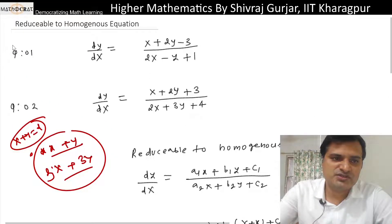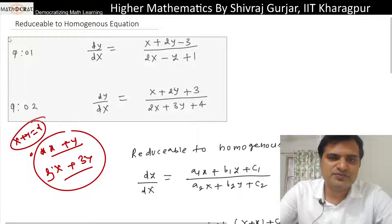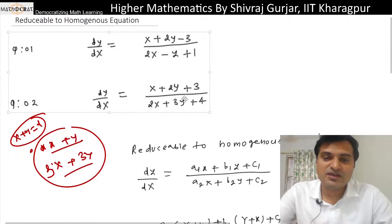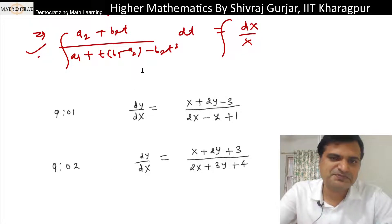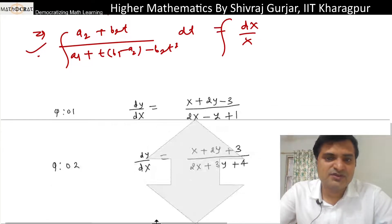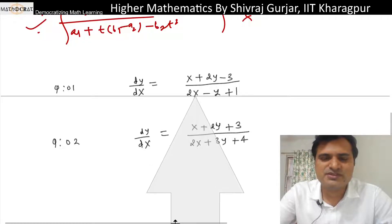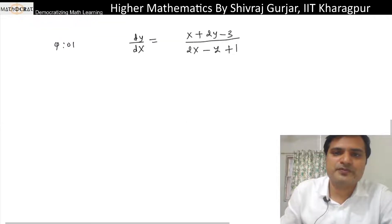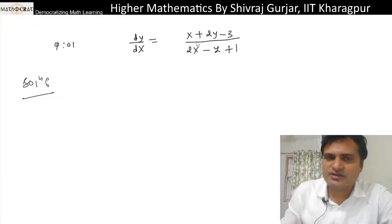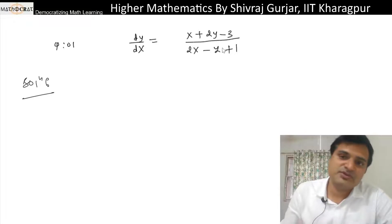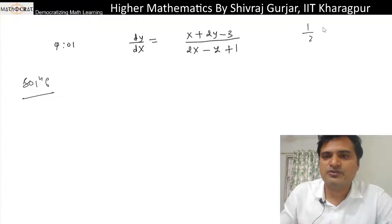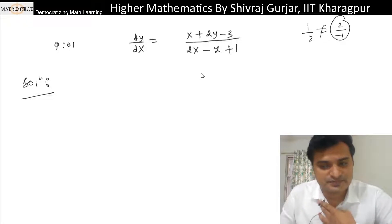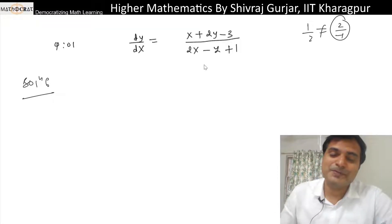Let us try these two questions — this is a very simple concept. These types of questions always come in exams; if you miss them it is a very heavy loss — everyone will do these. Standard methods apply here. Checking: a1/a2 = 1/2 and b1/b2 = 2/(-1) = -2 — they are not equal, so we go with the reducible to homogeneous equation form.